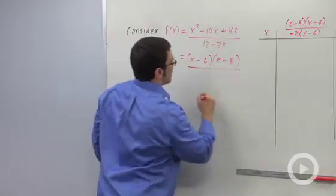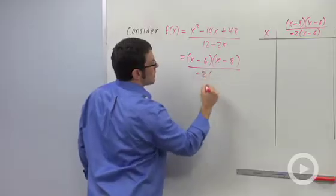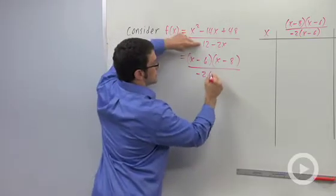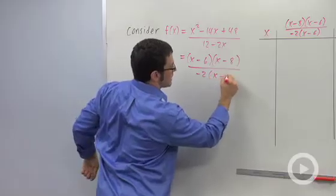And the denominator, I can just pull a negative 2 out, and that gives me negative 6 plus x, x minus 6.